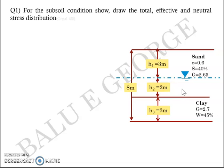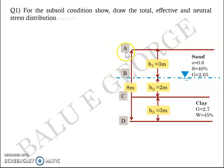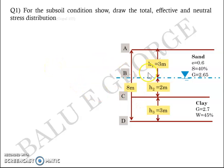We mark reference points A, B, C, and D. A is the topmost ground level, B is the water table level, C is the level at which clay and sand are separated, and D is the bottommost point. We label H1 = 3 m (above water table in sand), H2 = 2 m (sand below water table), and H3 = 3 m (depth of clay).